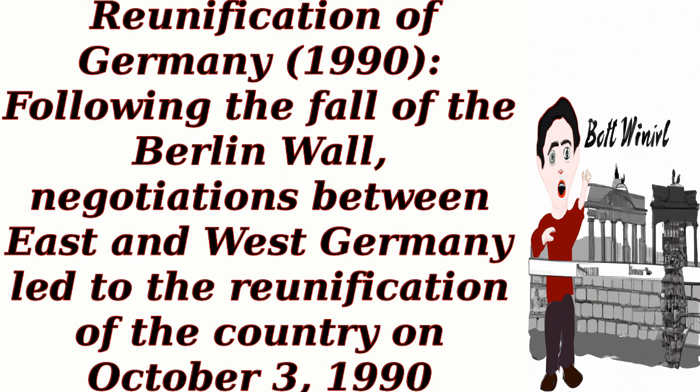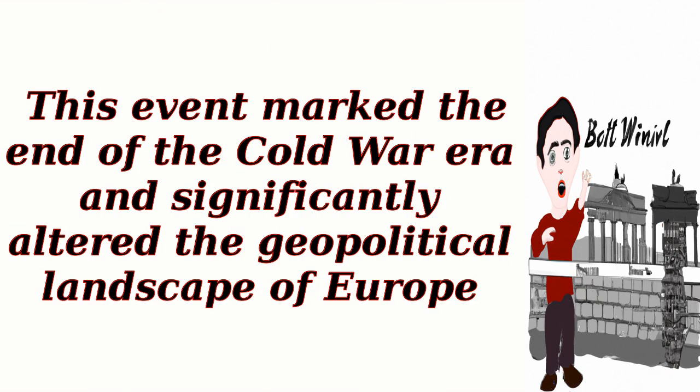Reunification of Germany, 1990: Following the fall of the Berlin Wall, negotiations between East and West Germany led to the reunification of the country on October 3, 1990. This event marked the end of the Cold War era and significantly altered the geopolitical landscape of Europe.